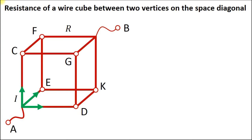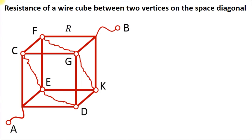For that reason, we can merge the points with the same potential. That will change nothing, because there would be no current through a conductor connecting points with the same potential. And now we can easily draw the equivalent circuit.